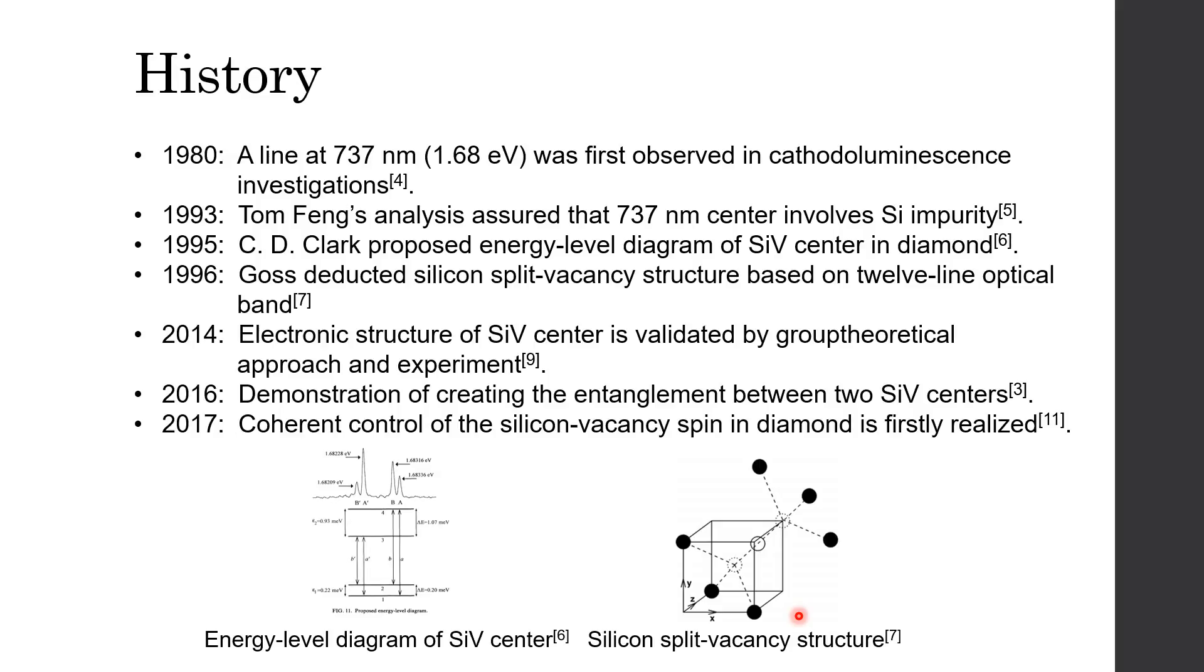This profound understanding paved the way for utilizing the SiV center in quantum information applications. In 2016, the entanglement between two SiV centers is created, which is an essential ingredient of quantum networks. In 2017, coherent control of the silicon-vacancy spin in diamond is first realized. I will talk about the last three papers later.